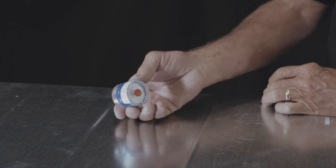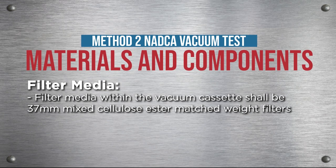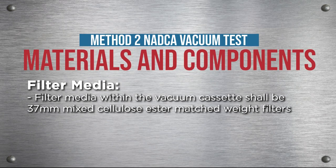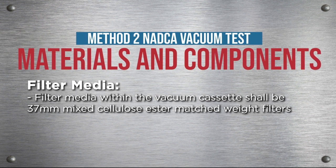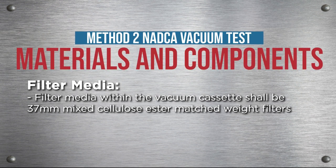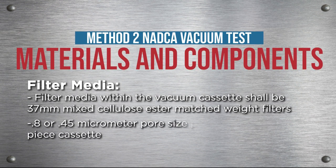Filter media: filter media within the vacuum cassette shall be 37 millimeter mixed cellulose ester matched weight filters, 0.8 or 0.45 micrometer pore size, pre-loaded in a three-piece cassette.